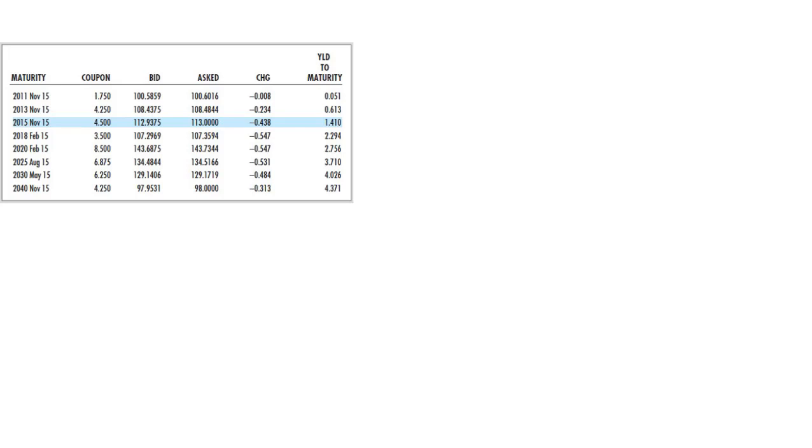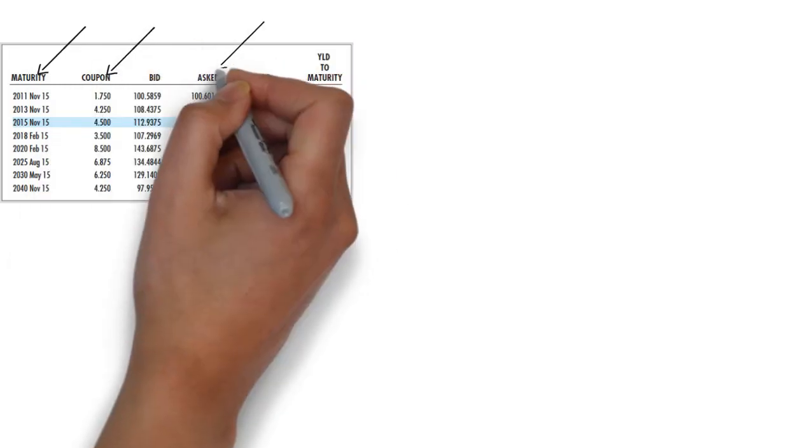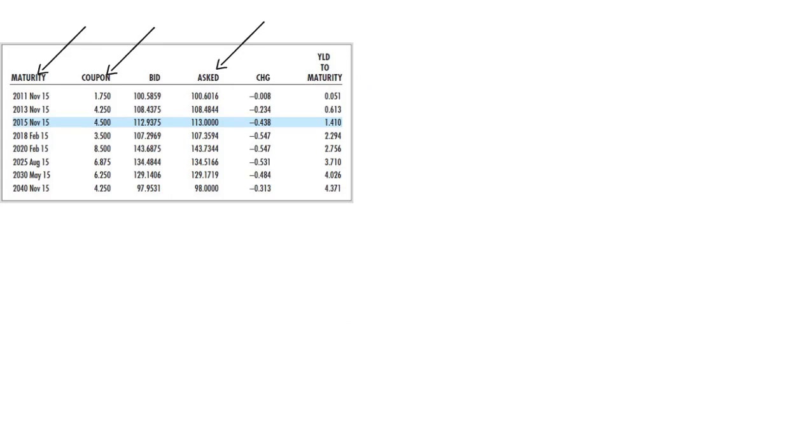Each row represents a Treasury bond quote. The first column provides information on when this bond will expire. The second column gives you the coupon rate. And the fourth column shows the asked price at which you can buy this bond from a dealer.